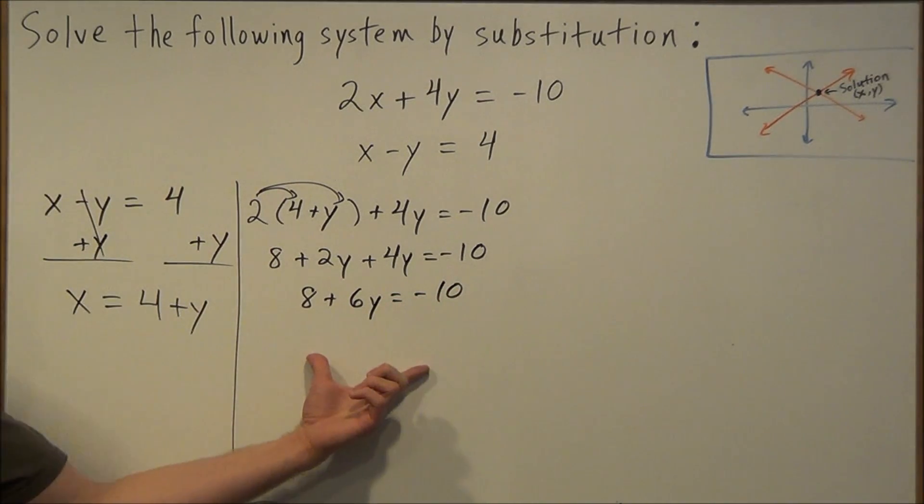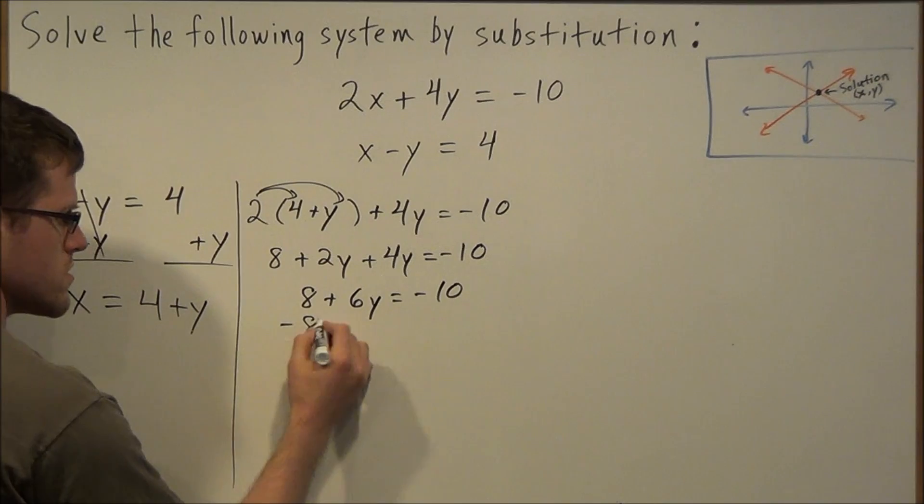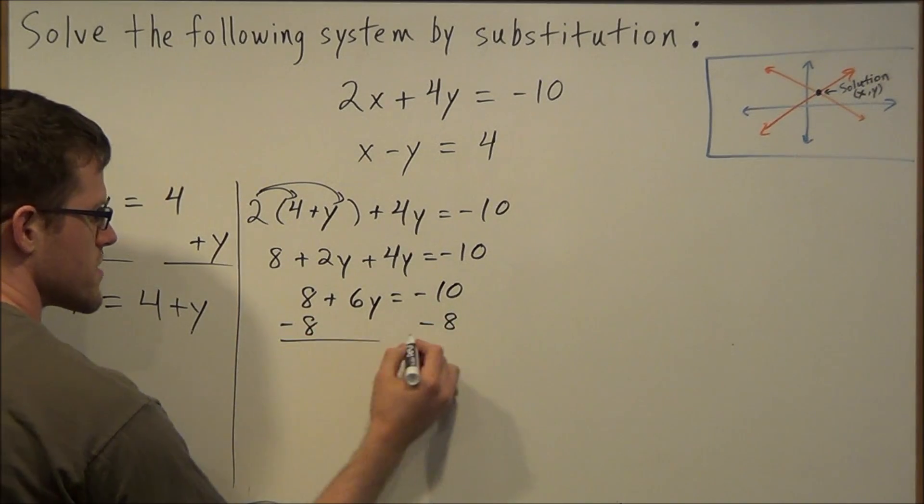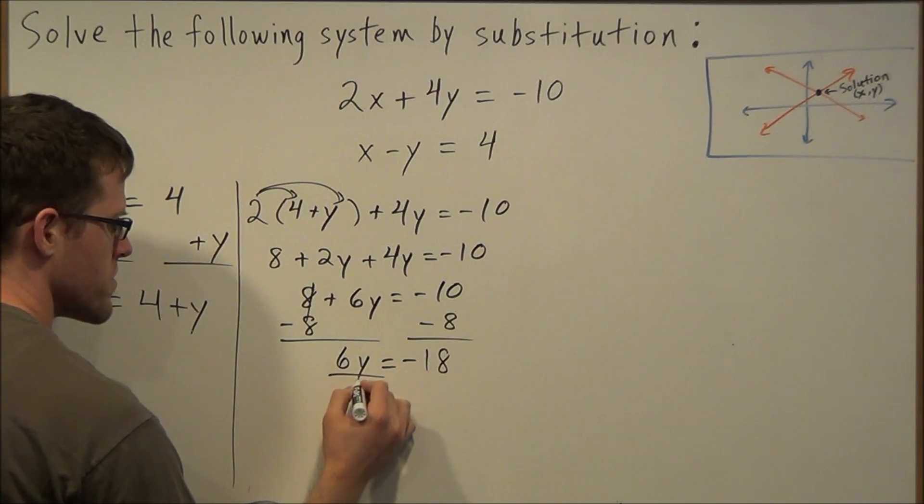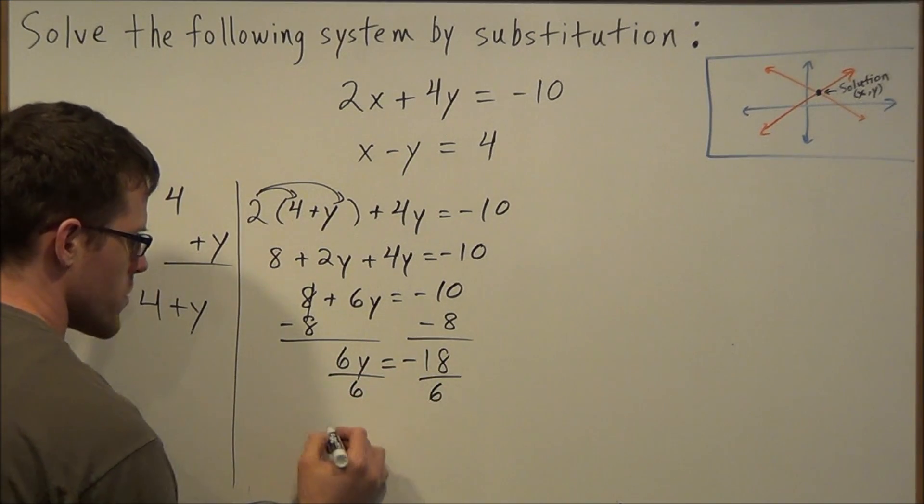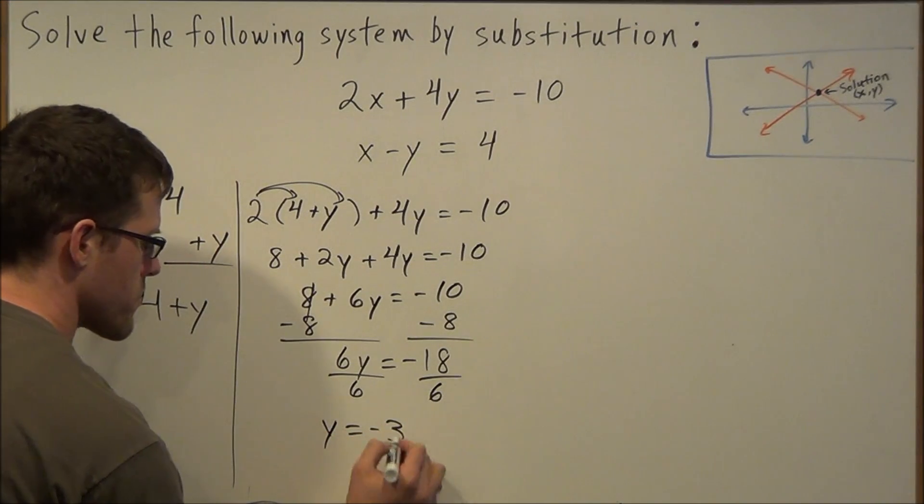And from here, we have two steps. So we're going to subtract 8 and then divide by 6. Okay, after we divide by 6, we have y equals negative 3.